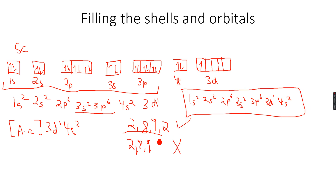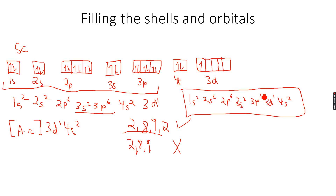Now, one thing left — the formation of ions. When forming ions, you remove electrons. Removing electrons happens in the same order as filling, however electrons are always removed from 4s first, then 3d. So remember: 4s fills first, 3d fills later; 4s empties first, 3d empties later.